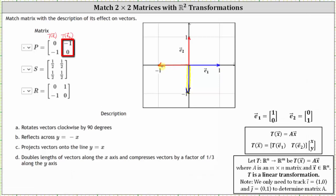This is the transformation of the vector E sub two. By studying these two transformed vectors, we want to describe the effect on the original vectors E sub one and E sub two. Notice how if we graph the line y equals negative x, which is a line with a vertical intercept of zero and a slope of negative one, the matrix has the effect of reflecting the vectors across the line y equals negative x. Therefore we select answer B.